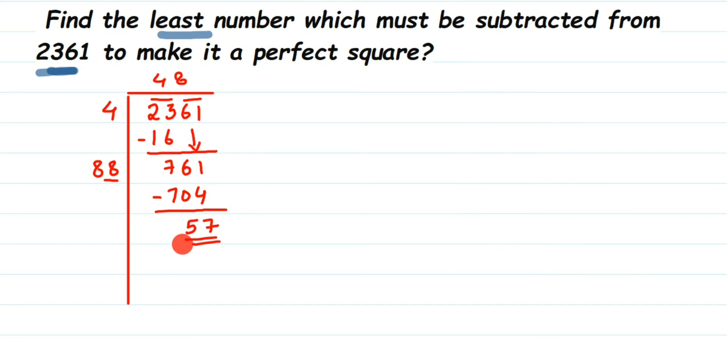So therefore the smallest number is 57. So 57 is the smallest number to be subtracted.